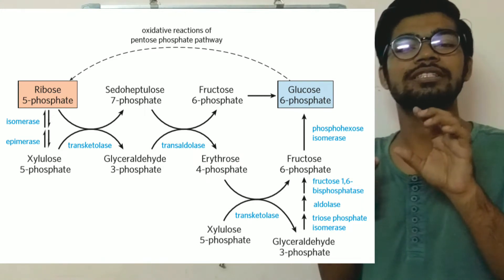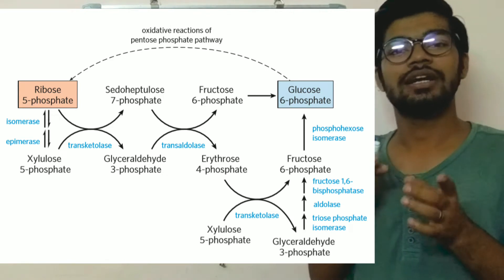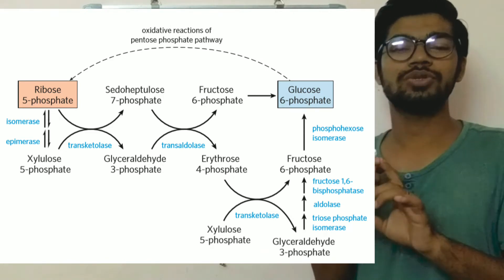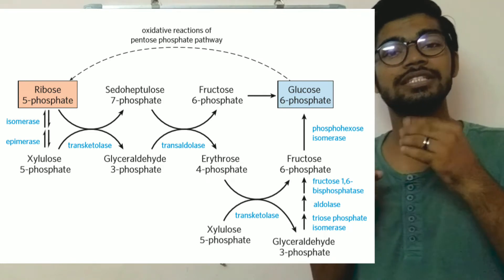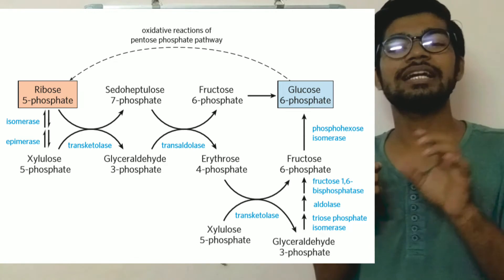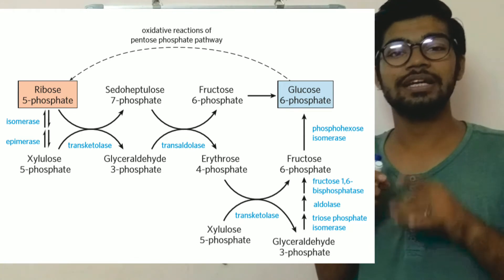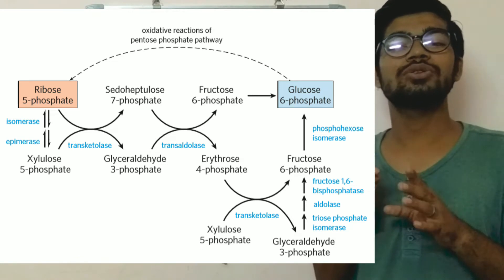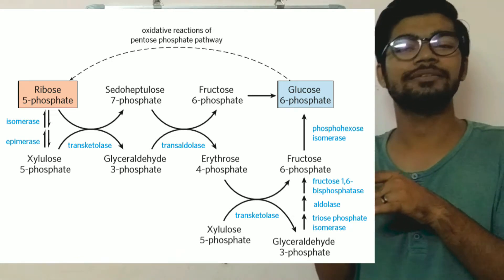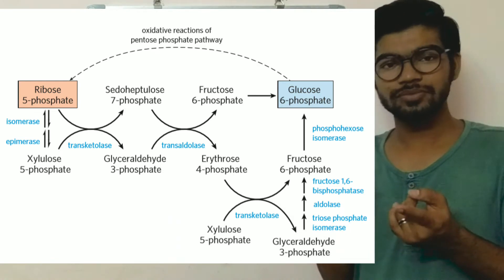By using transaldolase enzyme, the aldose sugar sedoheptulose gives three carbons to the acceptor glyceraldehyde-3-phosphate to form fructose-6-phosphate and four-carbon sugar erythrose-4-phosphate. Fructose is converted directly into glucose-6-phosphate by gluconeogenesis or by isomerase enzyme.